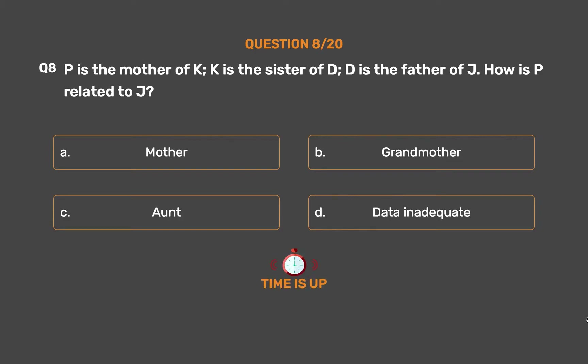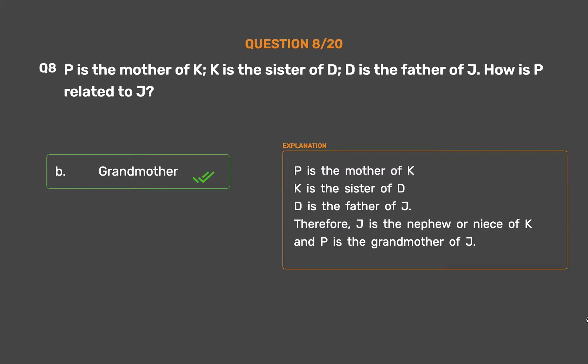The correct answer is Option B: Grandmother. P is the mother of K; K is the sister of D; D is the father of J. Therefore, J is the nephew or niece of K and P is the grandmother of J.